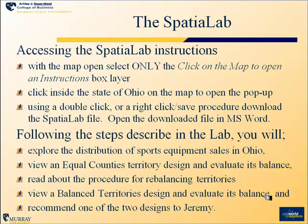You'll use those steps to explore the distribution of sports equipment sales in Ohio. You'll look at one solution suggested by Jeremy — an equal county solution that tries to equalize the number of counties and therefore the workload in each territory. We'll then discuss the procedure for rebalancing territories, moving from an unbalanced solution to a more balanced one. Finally, you'll evaluate a balanced territory design and recommend one of the two solutions to Jeremy.